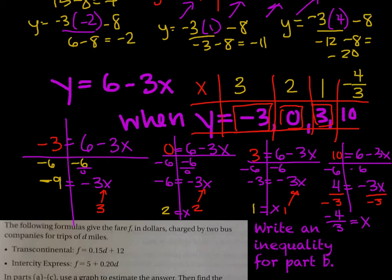If we were to create a graph with all these points — (3, -3), (2, 0), (1, 3), and (-4/3, 10) — we would see a linear equation form.